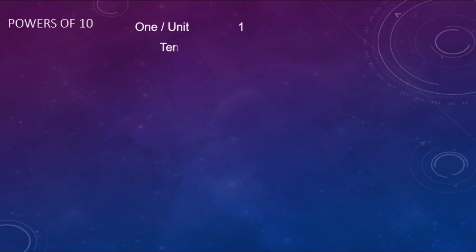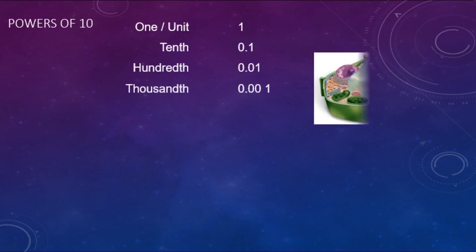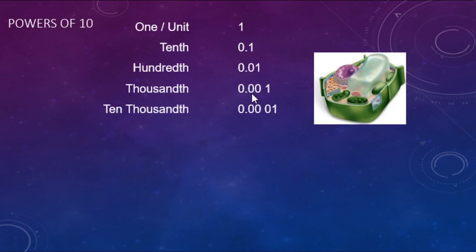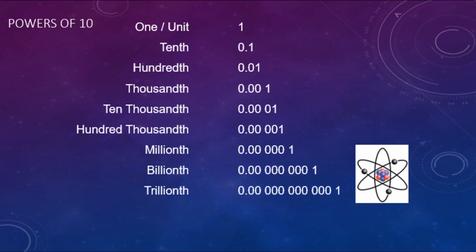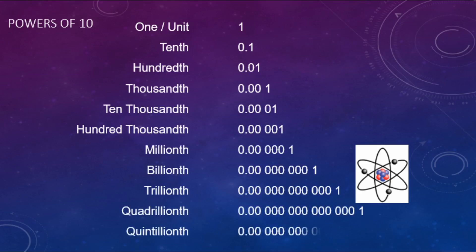Now we look at powers of 10 going smaller. Tenths, hundredths, thousandths — thousandths is a three zeros and then a one, as long as you've got the zero in front of the decimal point. Continuing to ten-thousandths, hundred-thousandths — you're going to have 0.00001 for hundred-thousandths. Down to millionths, billionths, trillionths — now we're looking at how big atoms are, super duper small. Quadrillionths and quintillionths have 18 zeros in front of that one.